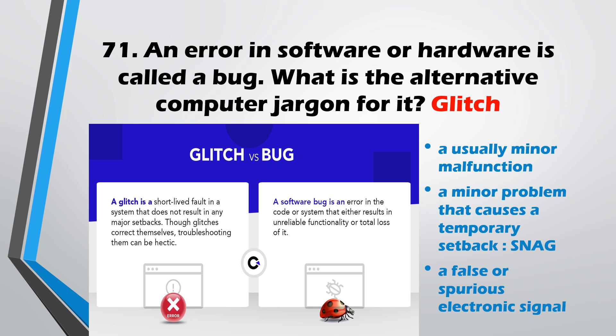Question No. 71: An error in software or hardware is called a bug. What is the alternative computer jargon for it? The answer is Glitch — both bugs and glitches refer to errors.